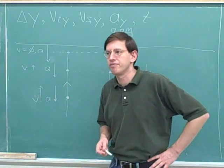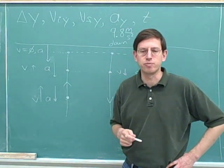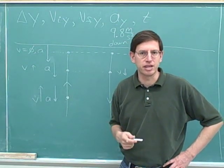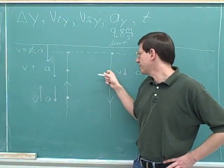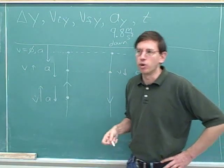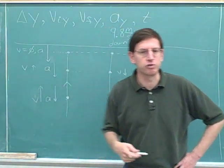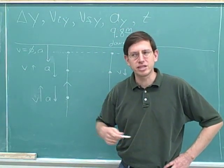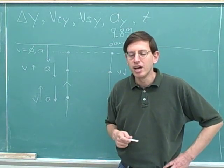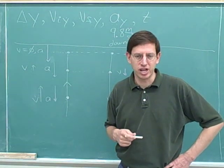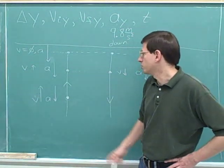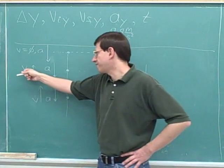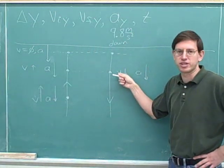These two points have the same displacement from the ground because they're both at the same height. For vertical projectile motion, if two points are at the same height, they should have the same speed. So whatever the speed was when we passed a point on the way up, that should be the same as the speed when we pass the corresponding point on the way down at the same height. If this is five meters per second going up, this should be five meters per second going down.